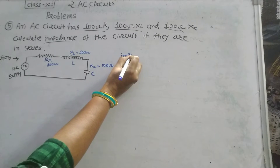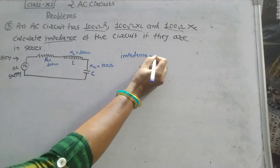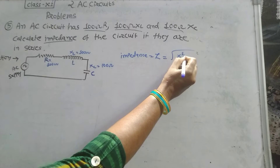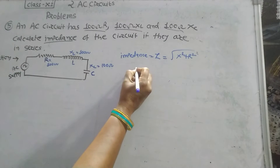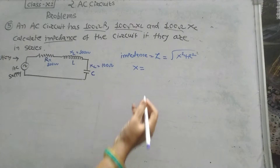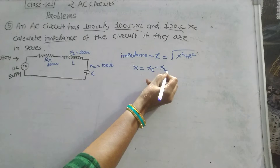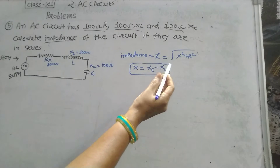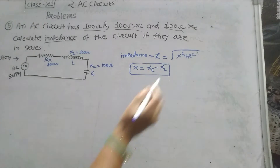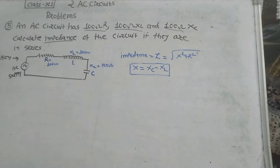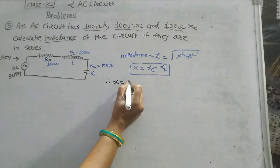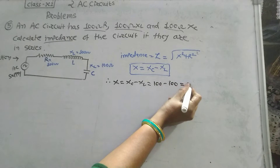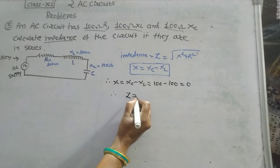We will calculate impedance Z using the formula: Z equals square root of X squared plus R squared, where X equals XC minus XL. So X equals XC minus XL, that is 100 minus 100, which equals 0.